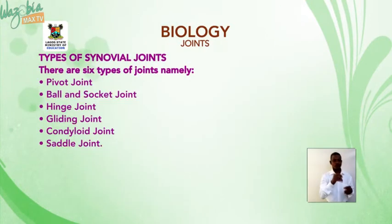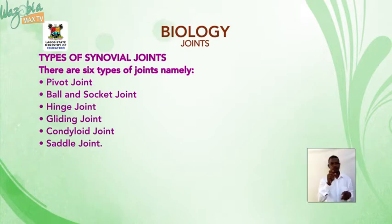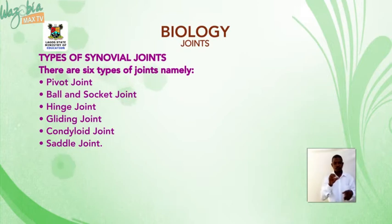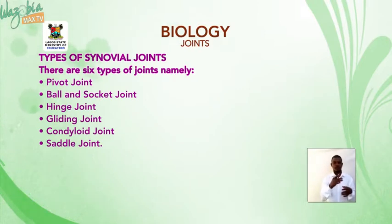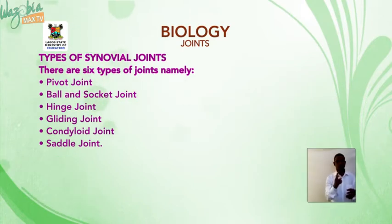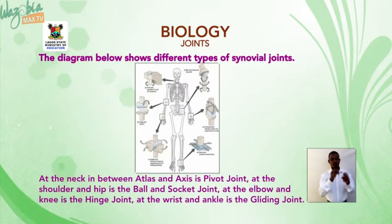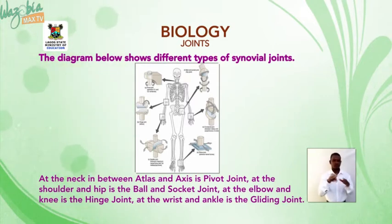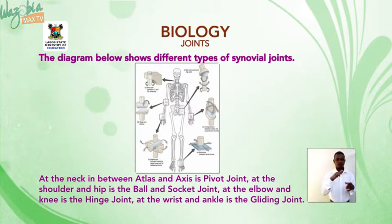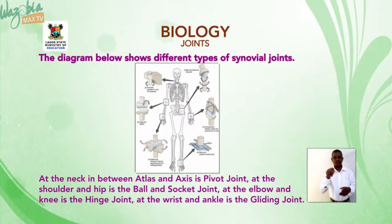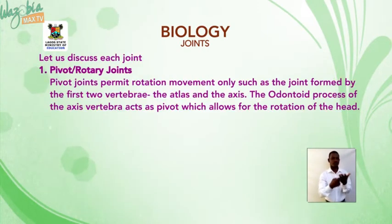There are six types of synovial joints: pivot joints, ball and socket joints, hinge joints, gliding joints, condyloid joints, and saddle joints. In the diagram showing different types: at the neck between atlas and axis is the pivot joint; at the shoulder and hip is the ball and socket joint; at the elbow and knee is the hinge joint; at the wrist and ankle is the gliding joint.